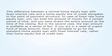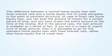The difference between a normal home equity loan with fixed interest rate and a home equity line of credit extends to the point of payment structure. In case of a fixed rate home equity loan, you can avail the amount of money for a certain period of time, and you have drawn the entire amount at the time of closing. But in the second case, the loan amount is available as a series of liens. If you are in need of an urgent fund of a large amount, it is advisable to go for the standard home equity loan with fixed interest rate rather than a home equity line of credit loan.